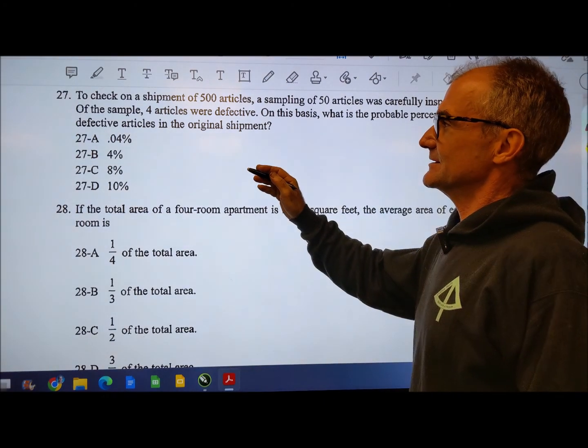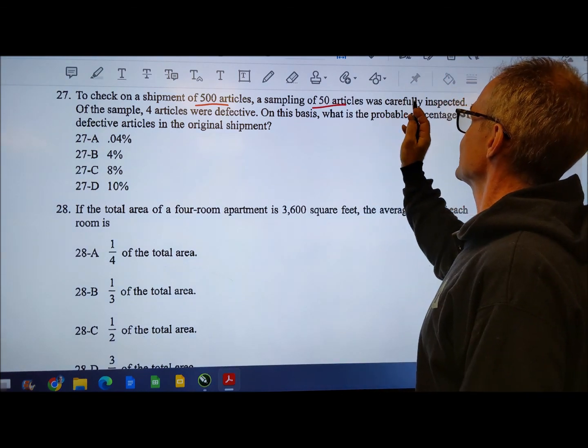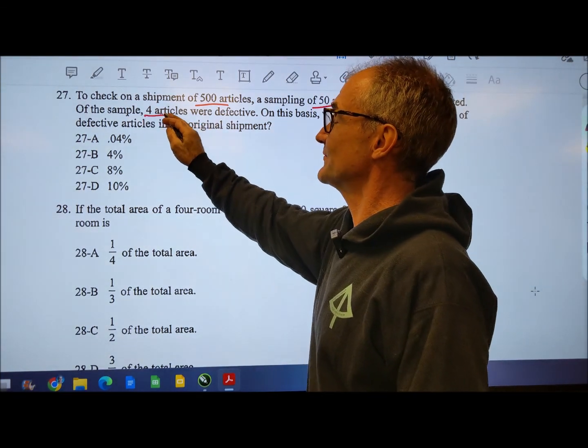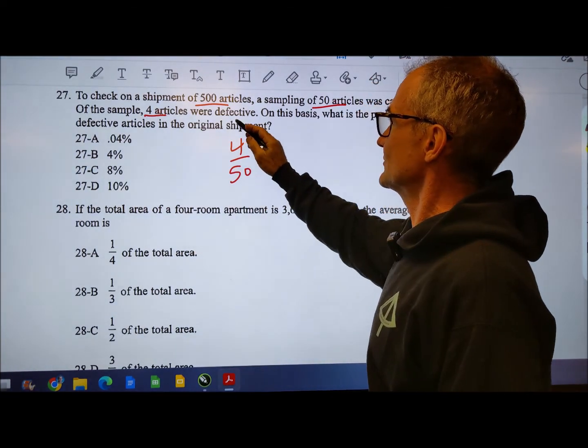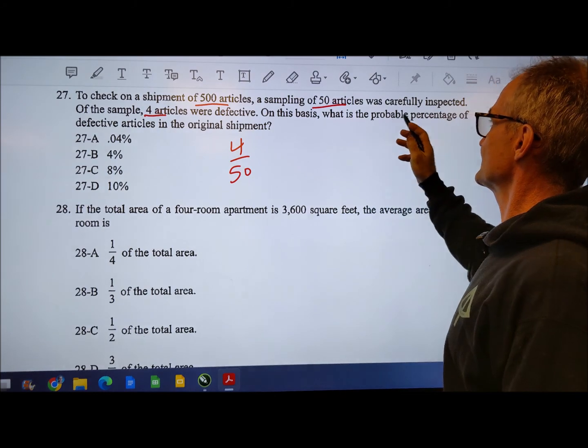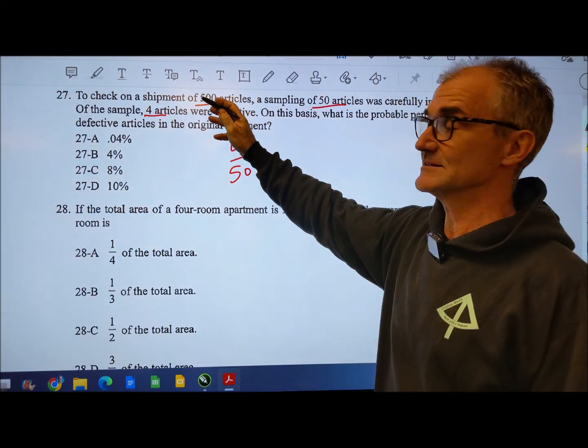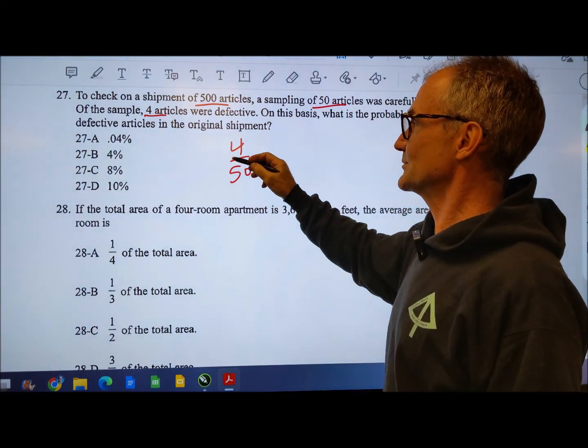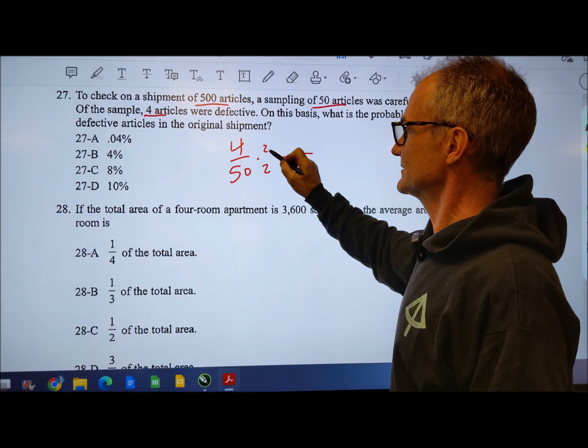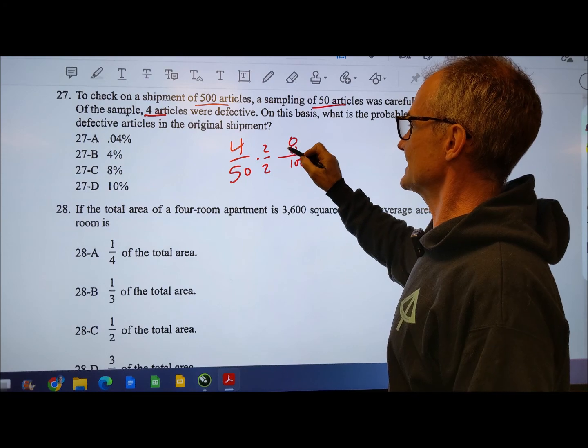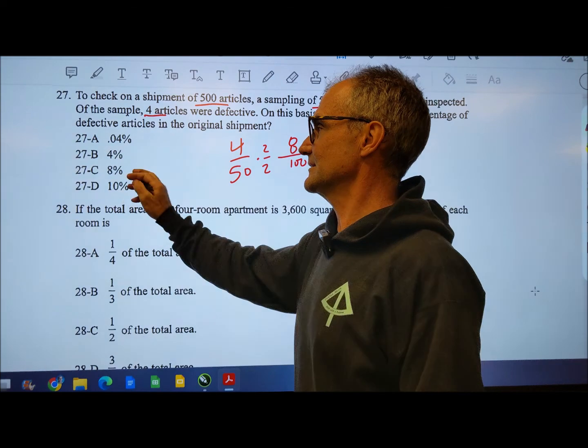Number 27, this is a hard one. Shipment of 500 articles, a sample of 50 is carefully inspected. Of the sample, four articles. So it's four of the 50 were defective. On this basis, what is the probable percentage of defective articles? So we have four out of 50. This 500 is actually just a distractor. So we want a percentage. So how do we get 50 to 100? We multiply by two. That's going to give us the 100. So we have eight out of 100 or eight percent. So there's a correct answer right there, eight percent.